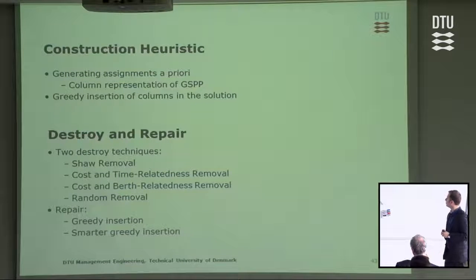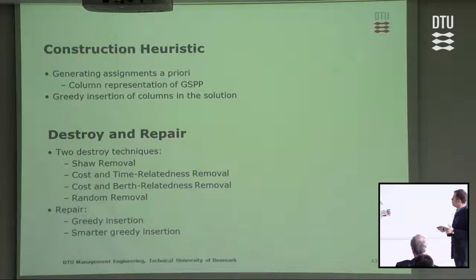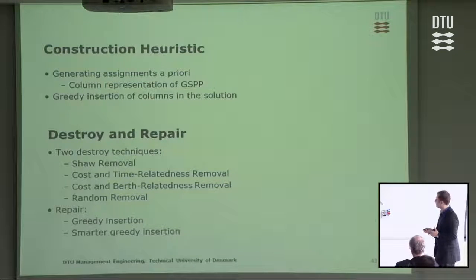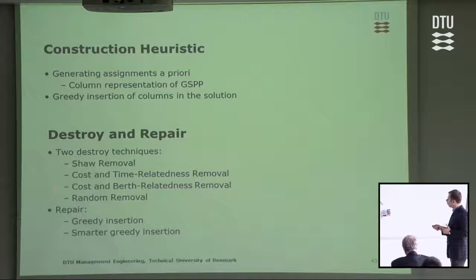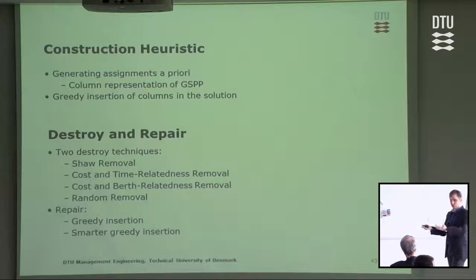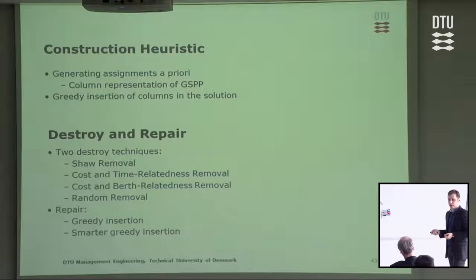The construction heuristic generates assignments a priori in a column pool and inserts them greedily into the solution space. There are four destroy methods: shaw removal, cost and time relatedness removal, cost and birth relatedness removal, and random removal. There are two repair methods: greedy insertion and smarter greedy insertion.